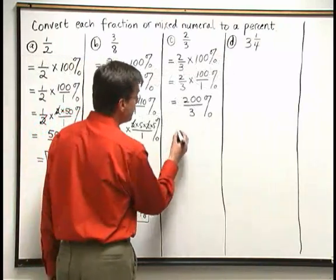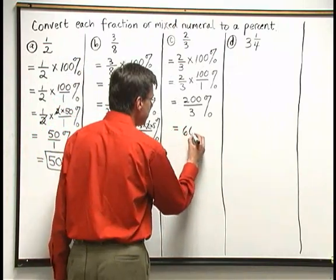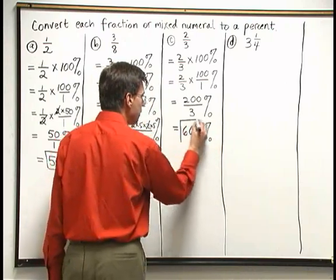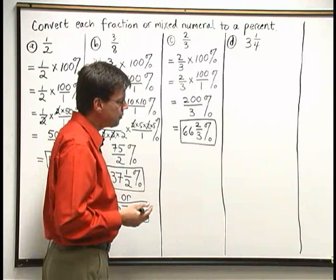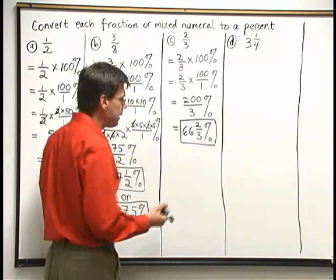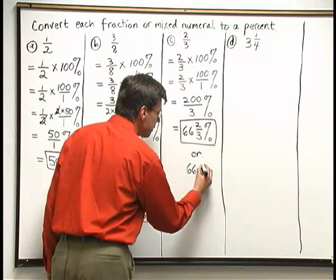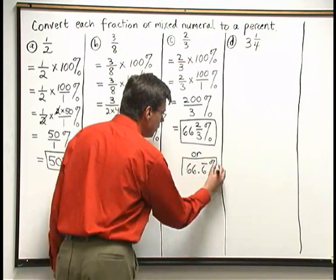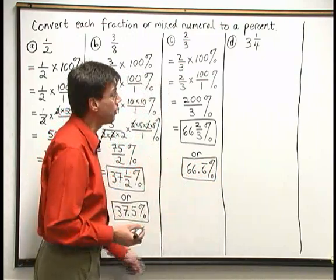So we have just seen here that 200 thirds percent can be written as 66 and 2 thirds percent. This percent also has a decimal form, but the decimal form is usually not used because the decimal for 2 thirds is a repeating decimal. We could write it as 66.6 with a bar above it percent, but this is very rare. Usually repeating decimals are left in fraction form when we work with percents.